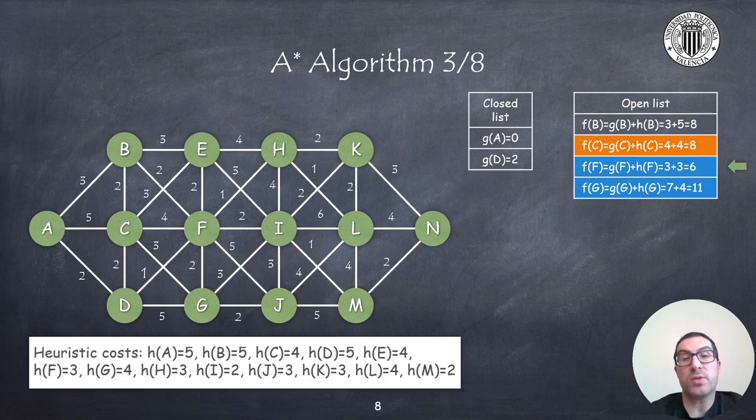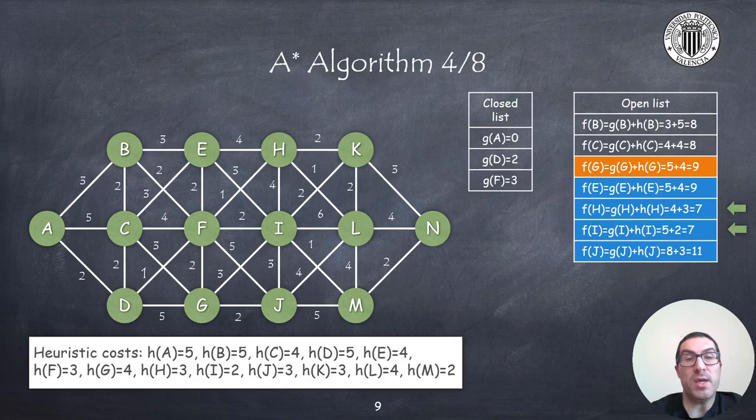Therefore, once D is in the closed list, C operative cost can be updated, because previously the cost was 5 units, due to the fact that the only way to reach C was from A, but now we can reach C through D, having an operative cost of 4 units, which also reduces the evaluation cost. So, updated nodes are highlighted in orange, as you can see. In the current state, the node with the lowest evaluation cost is F, which will enter into the closed list in the next iteration.